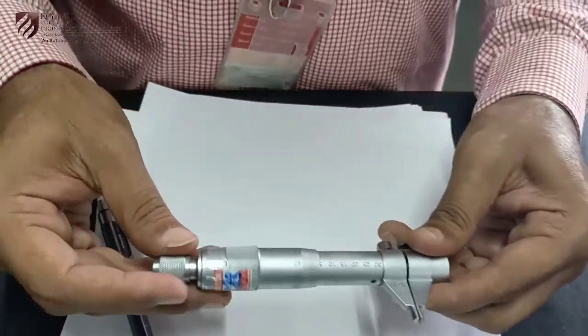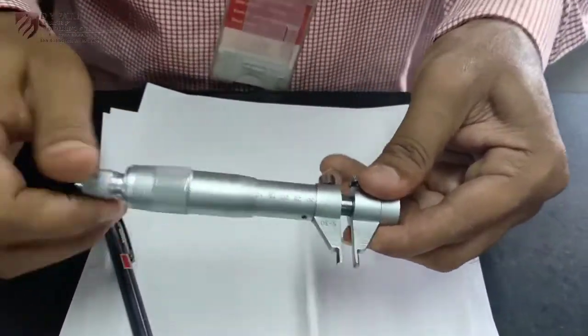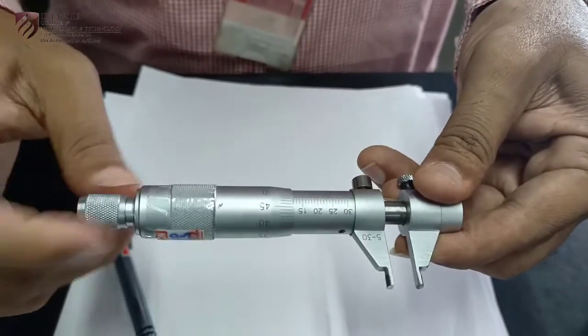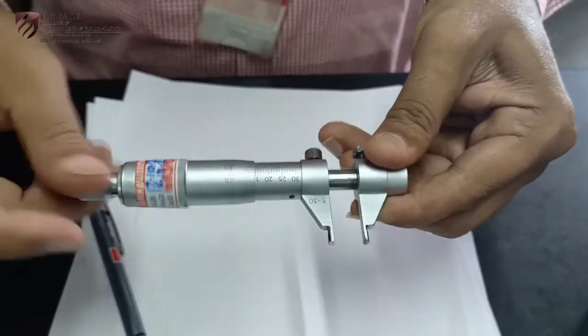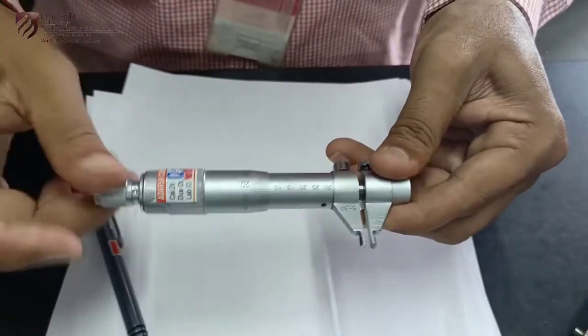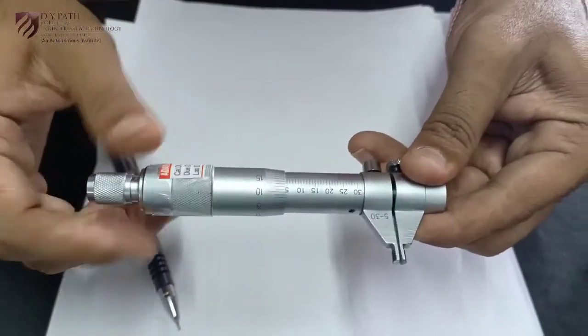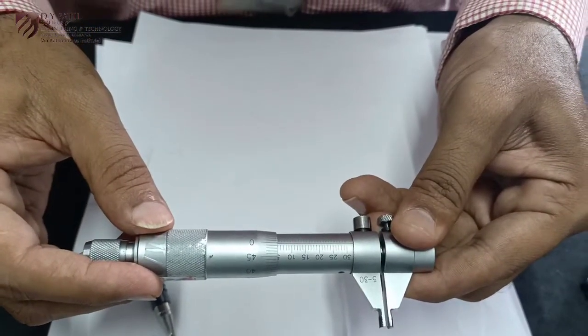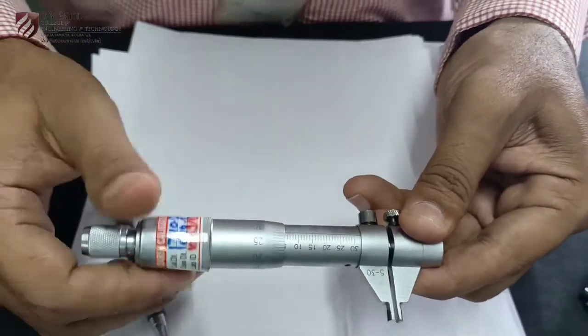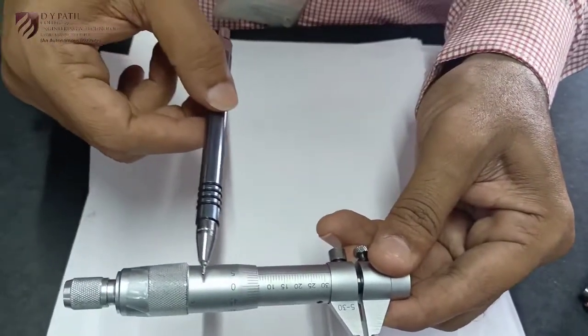When we rotate this inside micrometer in clockwise direction, the jaws will expand. That means initially when it is at 5, because the first reading is 5. When I rotate the thimble now, the thimble will start covering the reading.